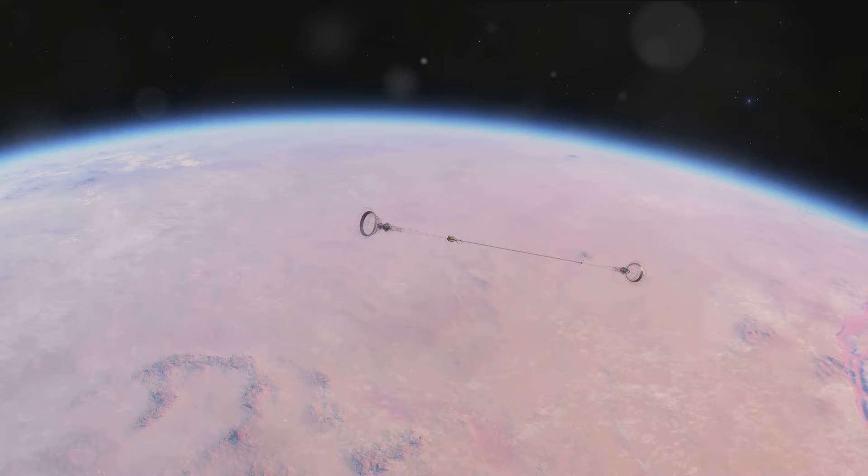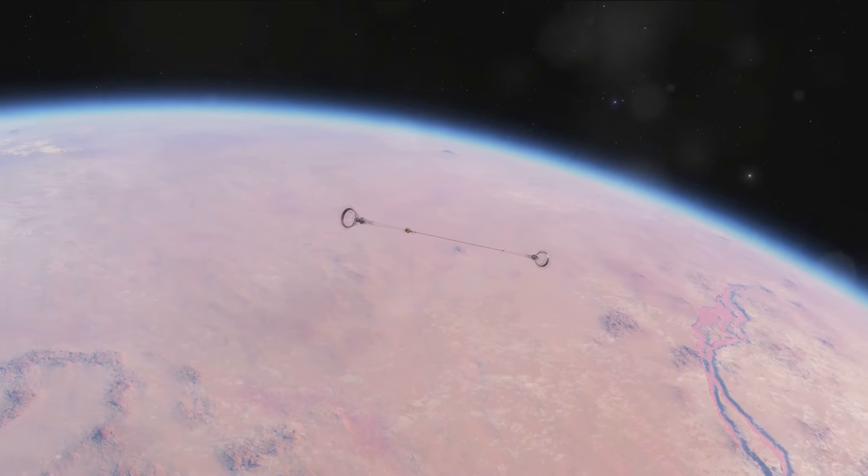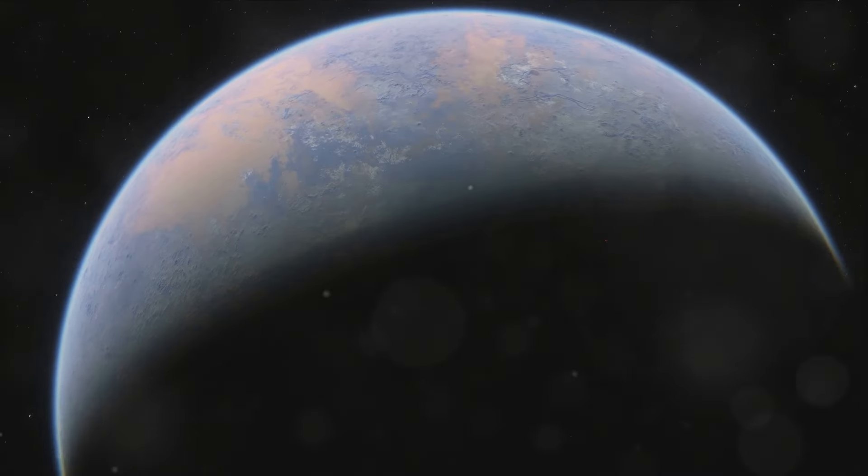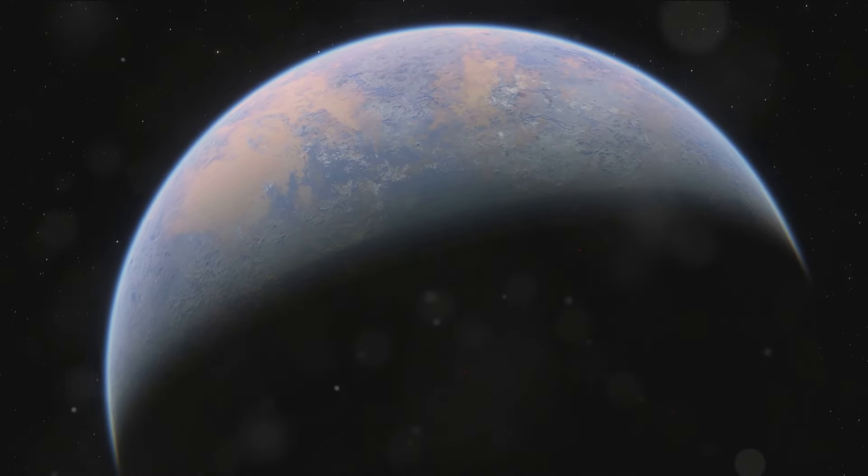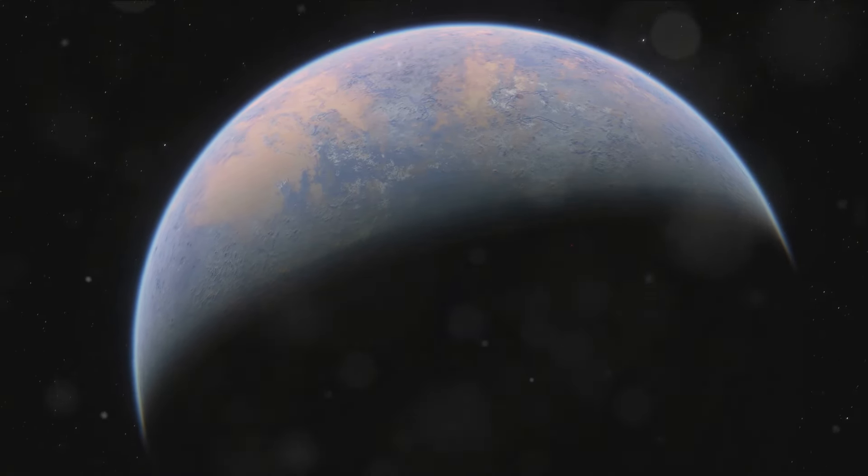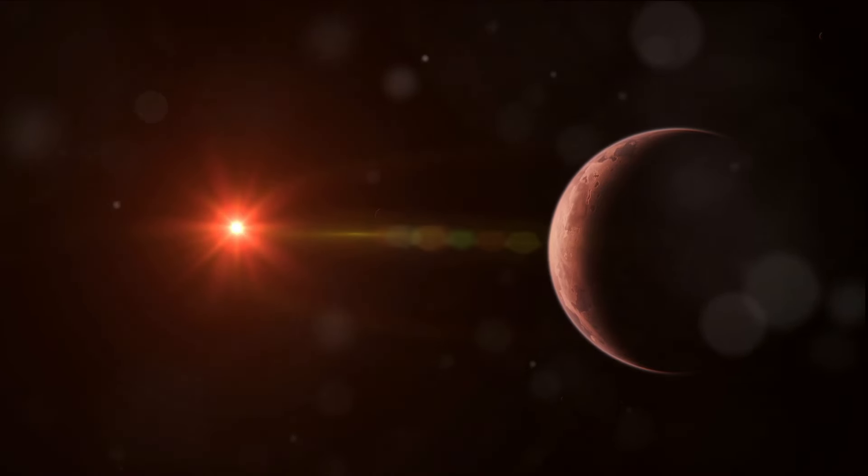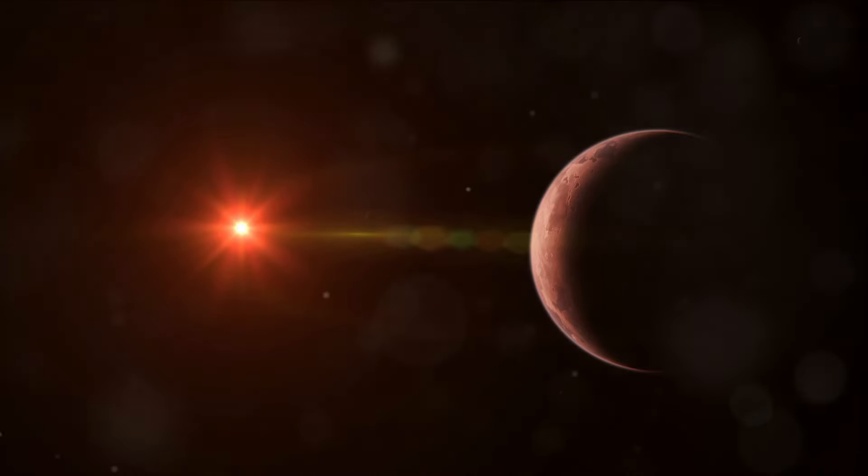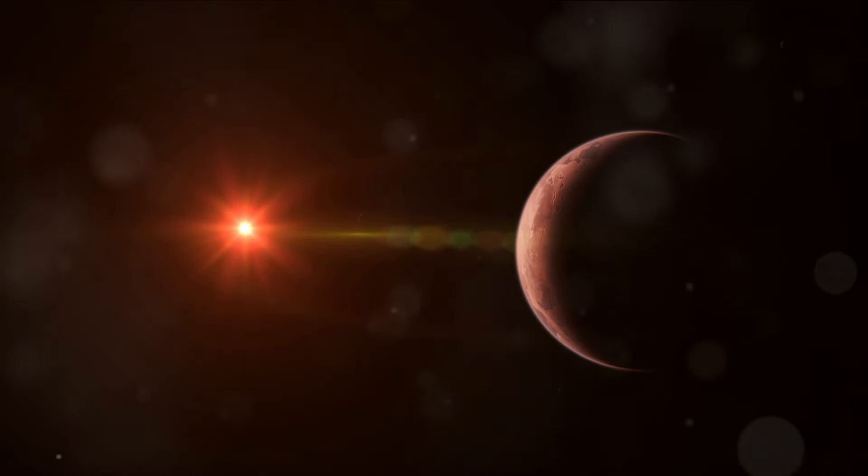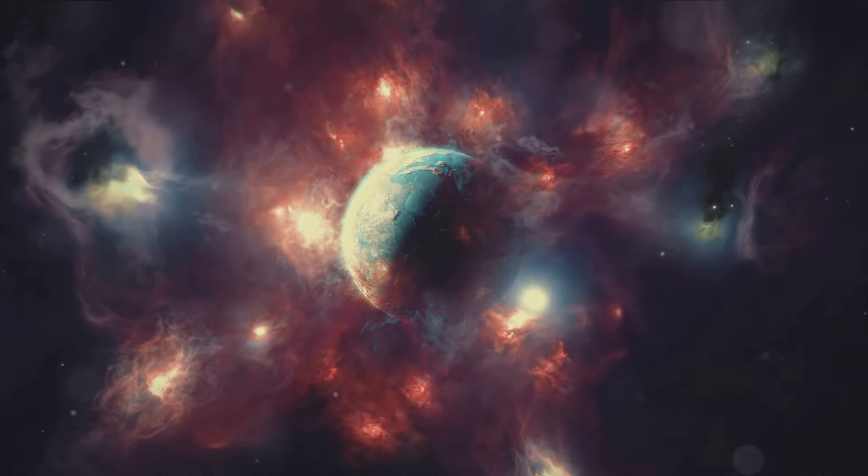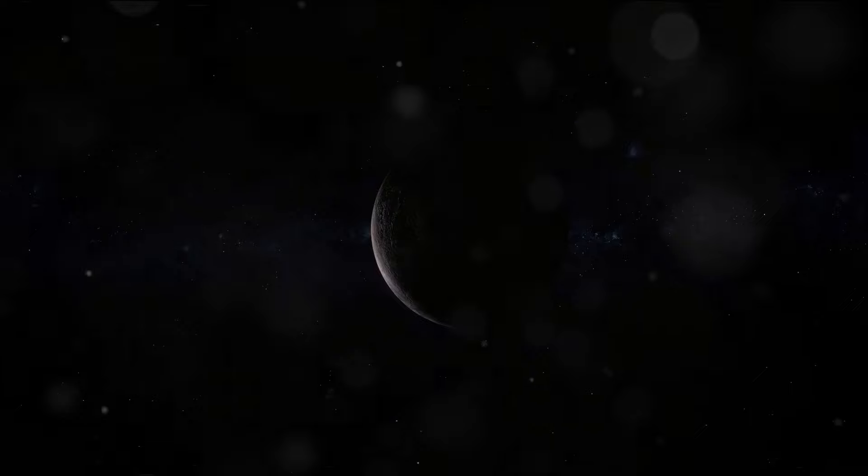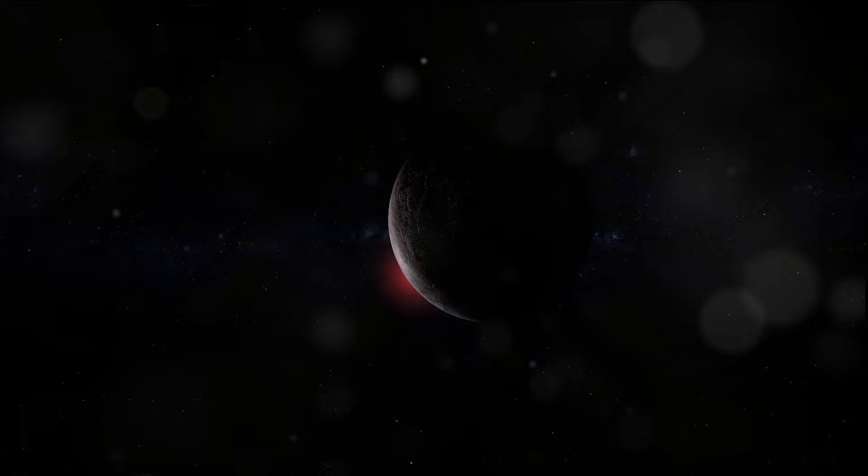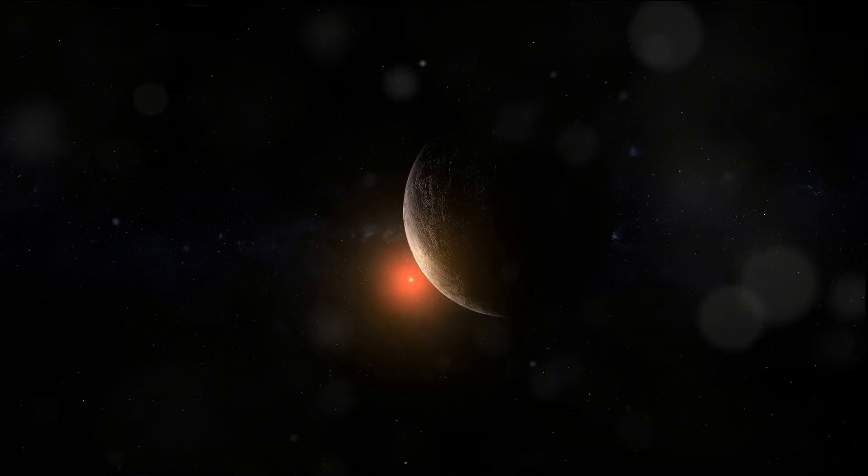This intriguing planet orbits a red dwarf star, a category of stars that are characteristically smaller and cooler compared to our sun. Despite its unassuming size, it emits just the right amount of warmth to potentially allow the existence of liquid water on the surface of Kepler-186f, a critical element for life as we understand it. However, the distance of Kepler-186f from its star implies that it receives only about one-third of the sunlight Earth does. This could cast a dim, perpetual twilight on this alien world, creating a landscape of subtle shades and cool hues that would be unimaginably different from anything we see on Earth. A world where the twilight reigns eternal.